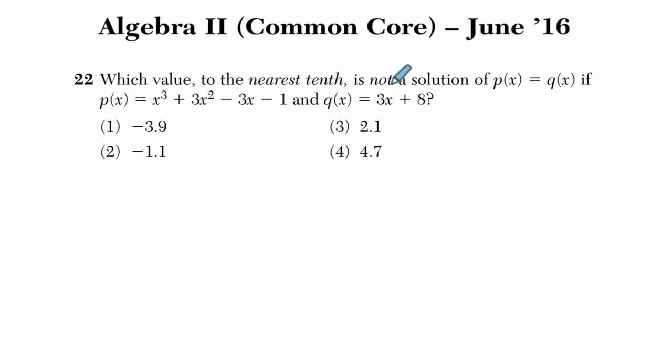Alright, they want to know which value to the nearest tenth is not a solution of p(x) equals q(x). If p(x) is this cubic function, right, third power makes it a cubic function. And q(x) is this linear function here with a slope of three and an intercept of eight. And we have all these different choices here.